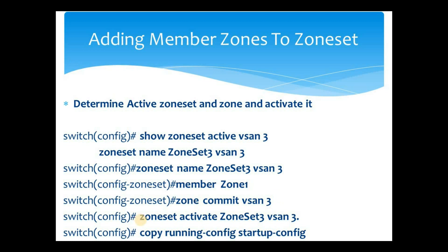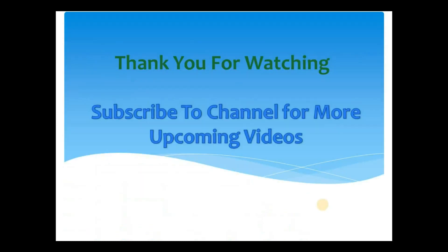The next step is to activate the zone set by executing 'zoneset activate zoneset3 vsan 3'. Once this command is executed, the zoning configuration becomes effective. This command must be executed every time changes are made to the zoning configuration. Finally, copy running config to startup config. This copies all running configuration to startup config so that after any switch reboot the OS takes information from startup config. Missing this step means you may lose zoning information after a reboot. That's all for this video — hope you got some idea of how to do zoning in Cisco MDS SAN switch.